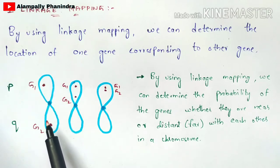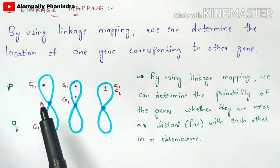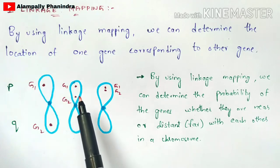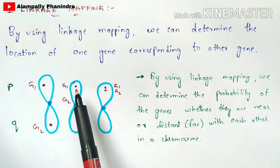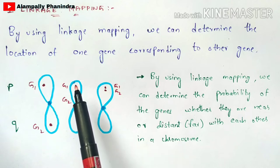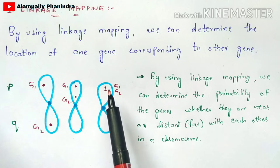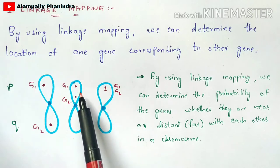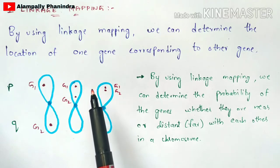Let us consider two genes G1 and G2, where G1 is present in the upper arm and G2 is present in the lower arm. The distance between both genes is very far. In the second case, G1 and G2 are on the same upper arm with a medium distance between them. In the third case, G1 and G2 are on the same upper arm but are near to each other when compared to the previous cases.